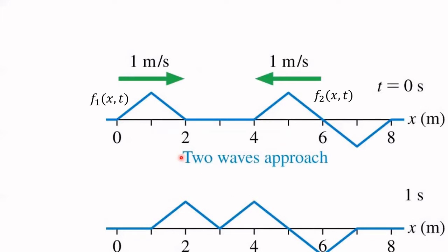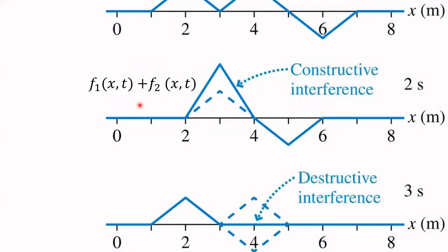Let's label these two signals. I could have used capital D for displacement, or the letter F, since these are functions of position and time. The displacement of the string depends on where you are and the time — that's why I'm labeling it F1. I've labeled the other pulse F2. As they pass through each other, the total displacement is simply the sum of the two functions, and you already know how to add functions. Of course, you have to evaluate them at the same x-coordinate and the same time coordinate.